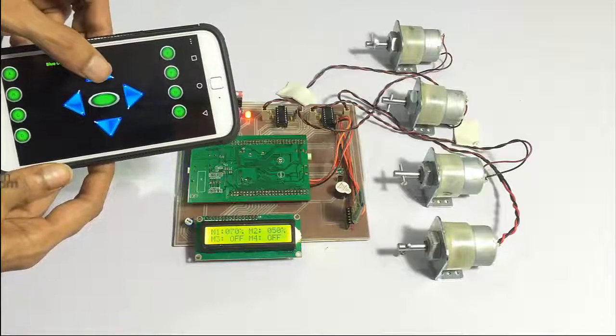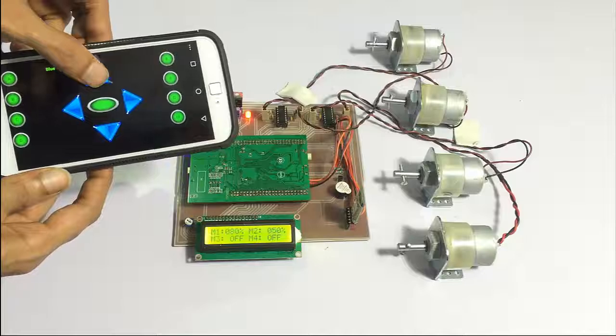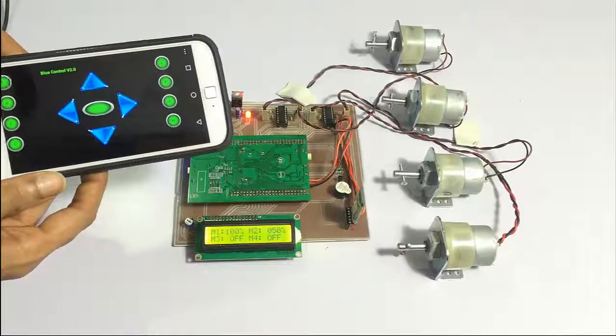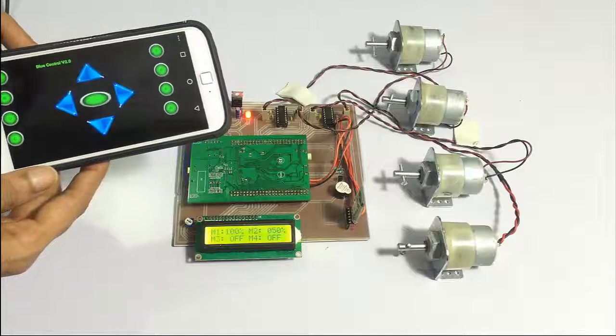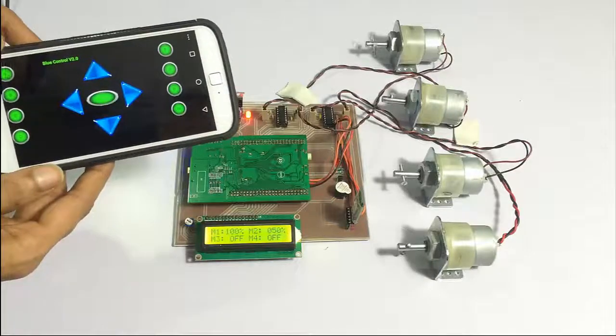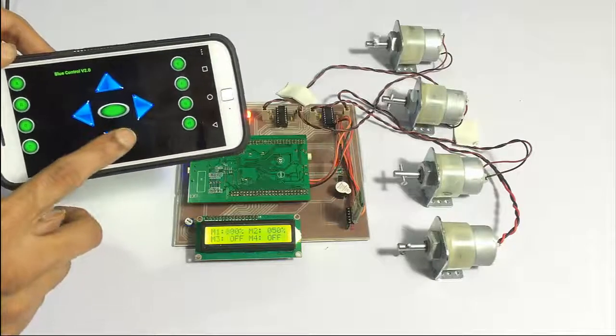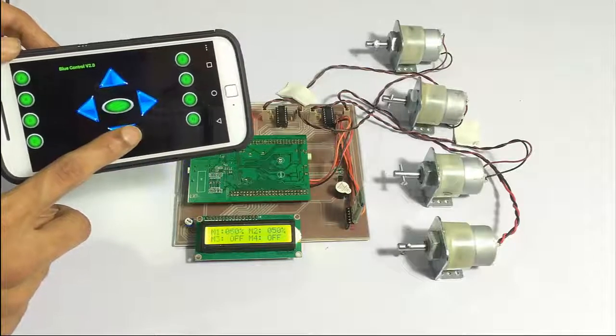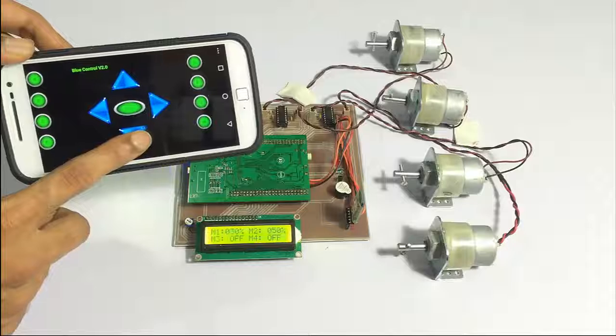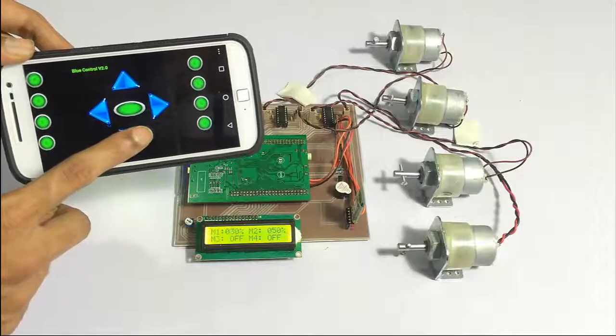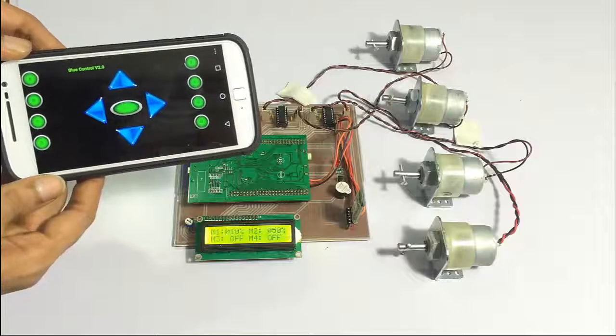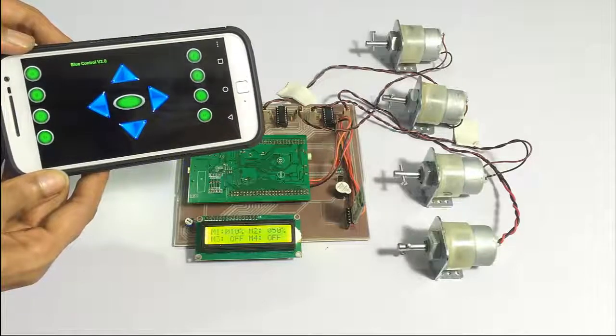Let's increase the speed of first motor and it is at its highest RPM now. Similarly let's decrease it. As you can see the speed of the first motor is slower than the second one and now it is at its slowest. Similarly let's do it for the second one.